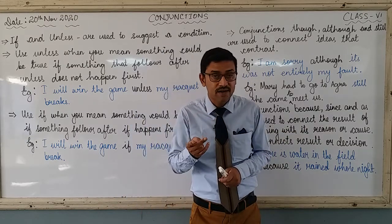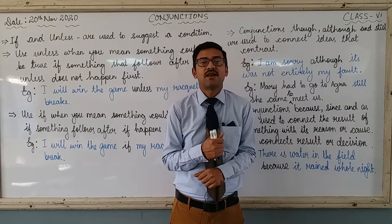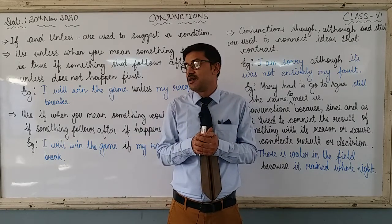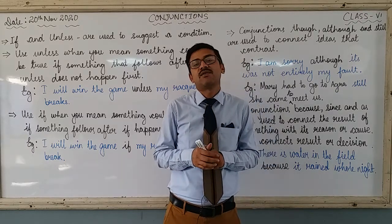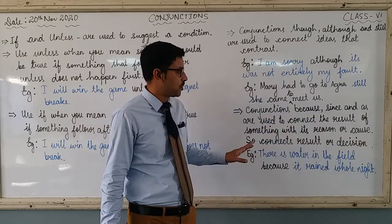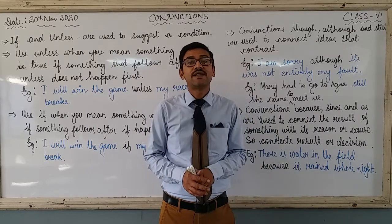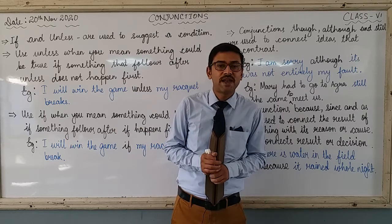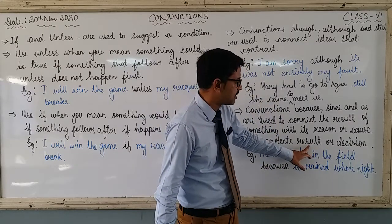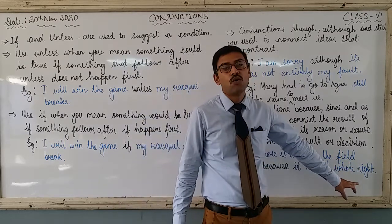Next — 'because,' 'since,' and 'as' are used to connect the result of something with its reason or causes. For example: 'I am wearing a jacket because it is cold' — the reason is that it is cold. 'I have switched on the AC as it was hot.' These conjunctions talk about reasons or causes. Also, 'so' is another subordinating conjunction — 'so' connects results or decisions. For example: 'I have prepared well for my examination, so my result will be good.'